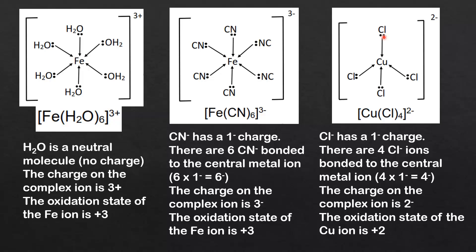Our last example has the chloride ion as the ligand. The chloride ion has a one negative charge. There are four chloride ions bonded to the central metal ion, giving us a total negative charge of 4 times 1 negative equals 4 negative.